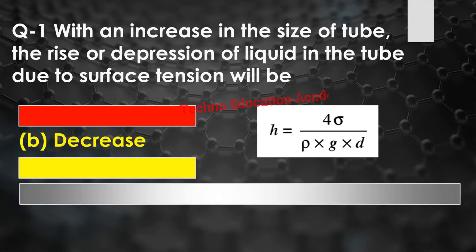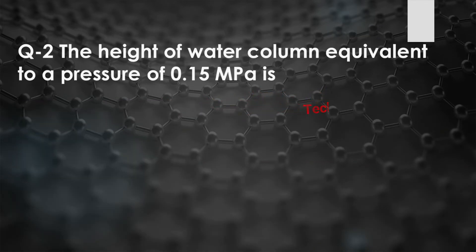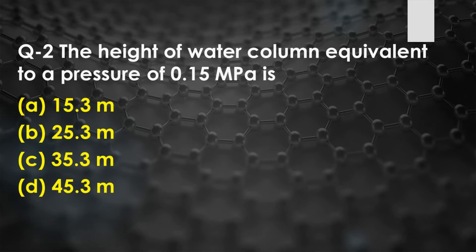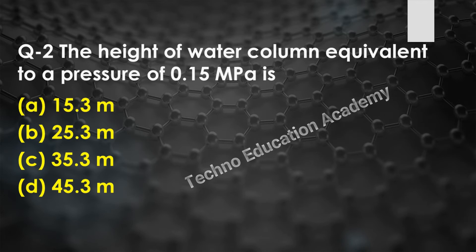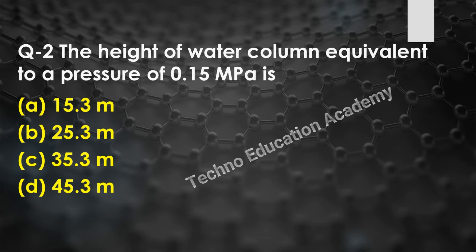Question number two: The height of water column equivalent to a pressure of 0.15 megapascal is — option A: 15.3 meters, option B: 25.3 meters, option C: 35.3 meters, option D: 45.3 meters.